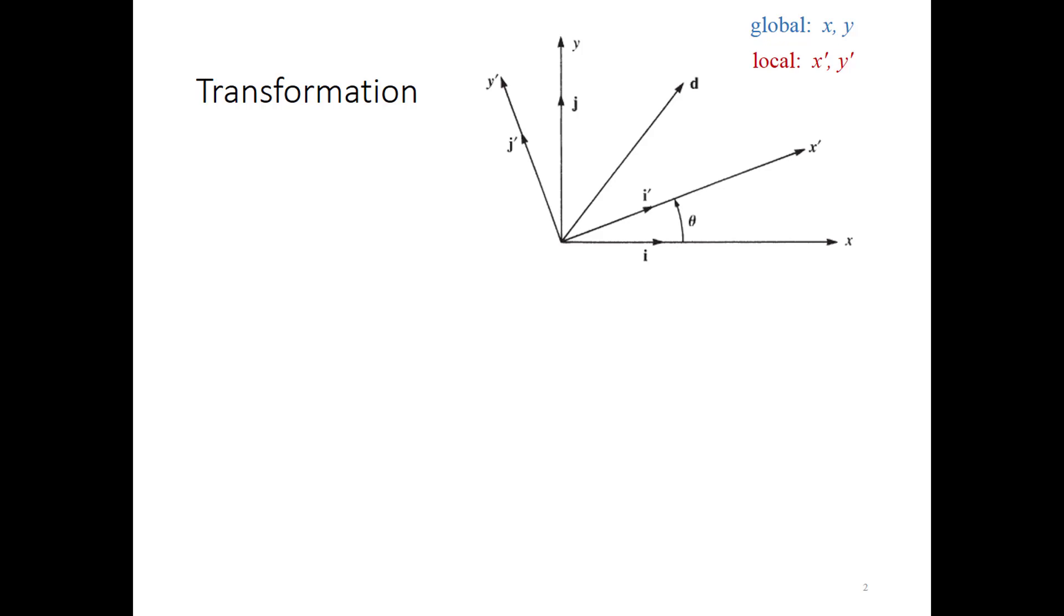So in the case of the bar element we're looking at here, X' would correspond to the axis of the bar. So we can write the vector D in terms of these two coordinate systems. In the global system, D is just dx times i-hat plus dy times j-hat. In the local coordinate system, D can be written as dx' i-hat prime plus dy' times j-hat prime.